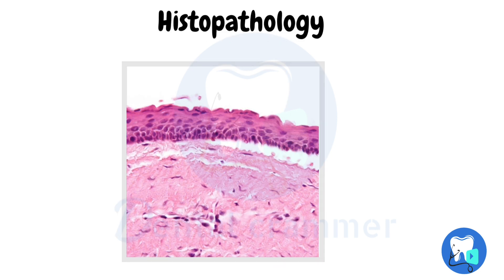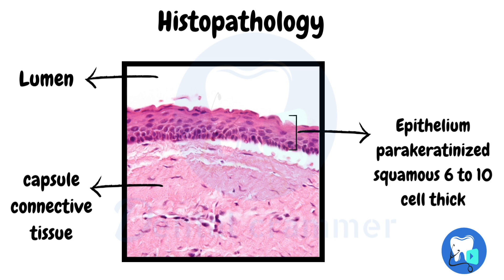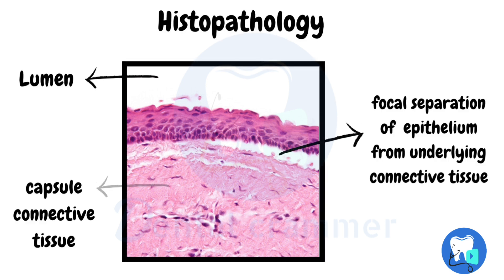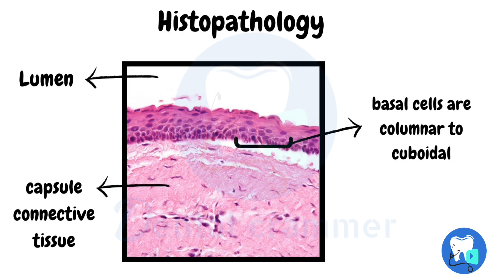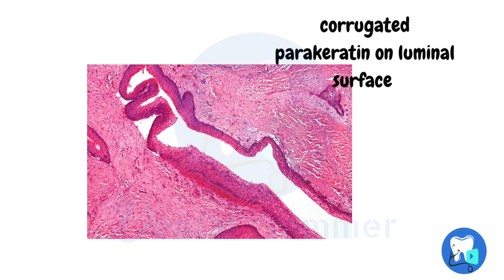Regarding the histopathology of OKC, as seen in the diagram, the epithelial lining is parakeratinized squamous and consists of 6 to 10 cell layers. The epithelium separates the lumen from the capsule. However, there are certain areas of focal separation of the epithelium from the underlying connective tissue capsule. The basal cells facing the connective tissue capsule are columnar to cuboidal.